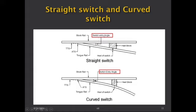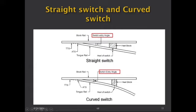The angle between the gauge line of the stock rail and the gauge line of the tongue rail at the closed position — at the theoretical toe of switch — is called the switch angle (for straight switches). In the case of curved switches, the tongue rail is made curved to ensure smooth entry into the turnout side. Here, a tangent is drawn at the actual toe of switch, and the angle between that tangent and the gauge line of the stock rail is called the switch entry angle.